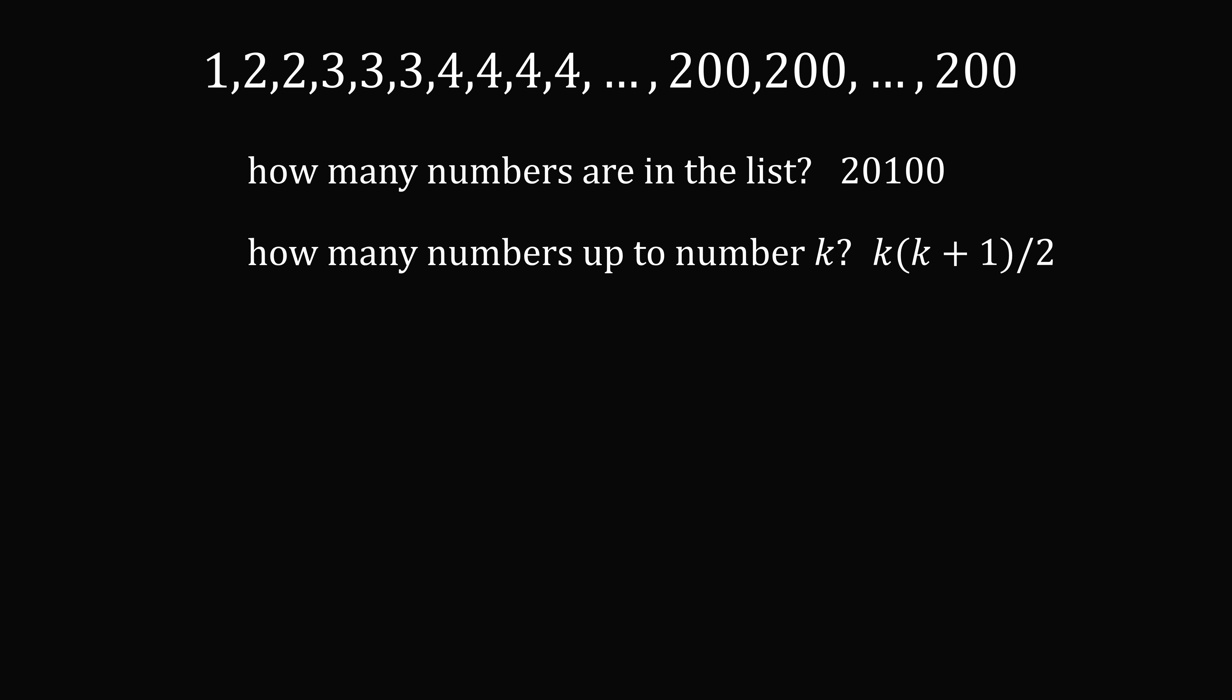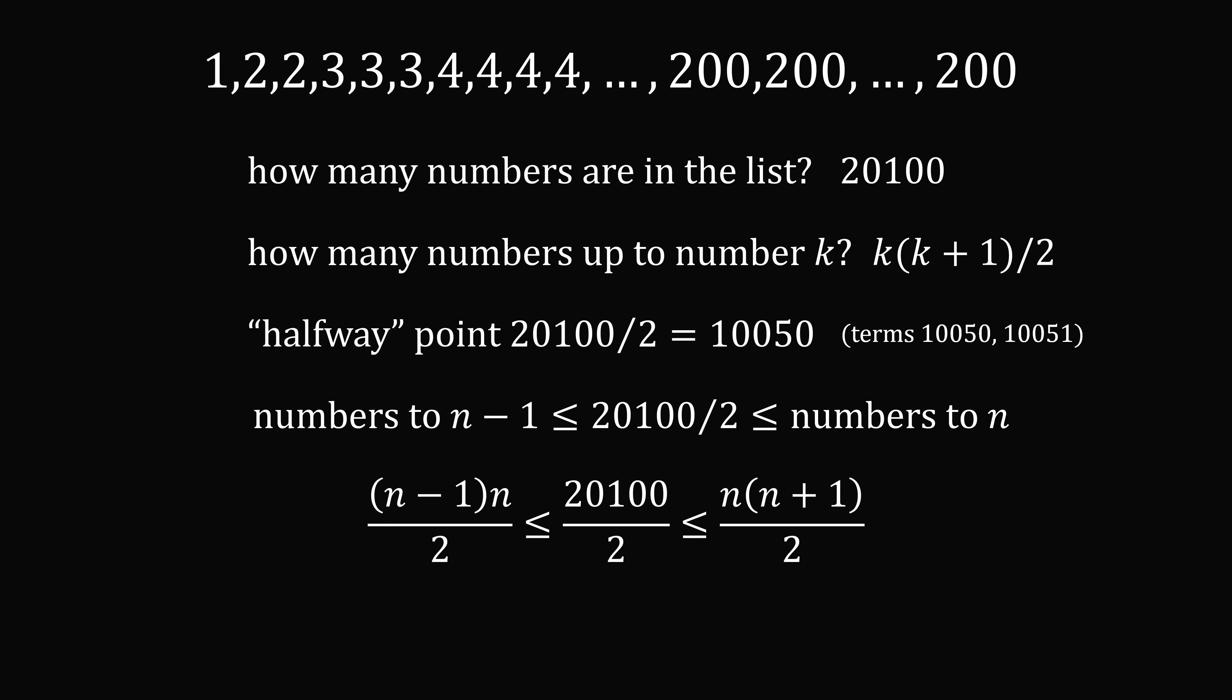So where do we go from here? We want the median. Now the list is already in ascending order, so that's good. The halfway point will be the total number, 20,100 divided by 2. So the median will be any number between the terms. Because the total number of numbers in the list is an even number, we need to take any number between these two terms. So we want the numbers up to n - 1 to be ≤ 20,100/2, which is ≤ the numbers up to n. So we can write this using the formula (n - 1)n/2 ≤ 20,100/2 ≤ n(n + 1)/2. So how can we work out this inequality?